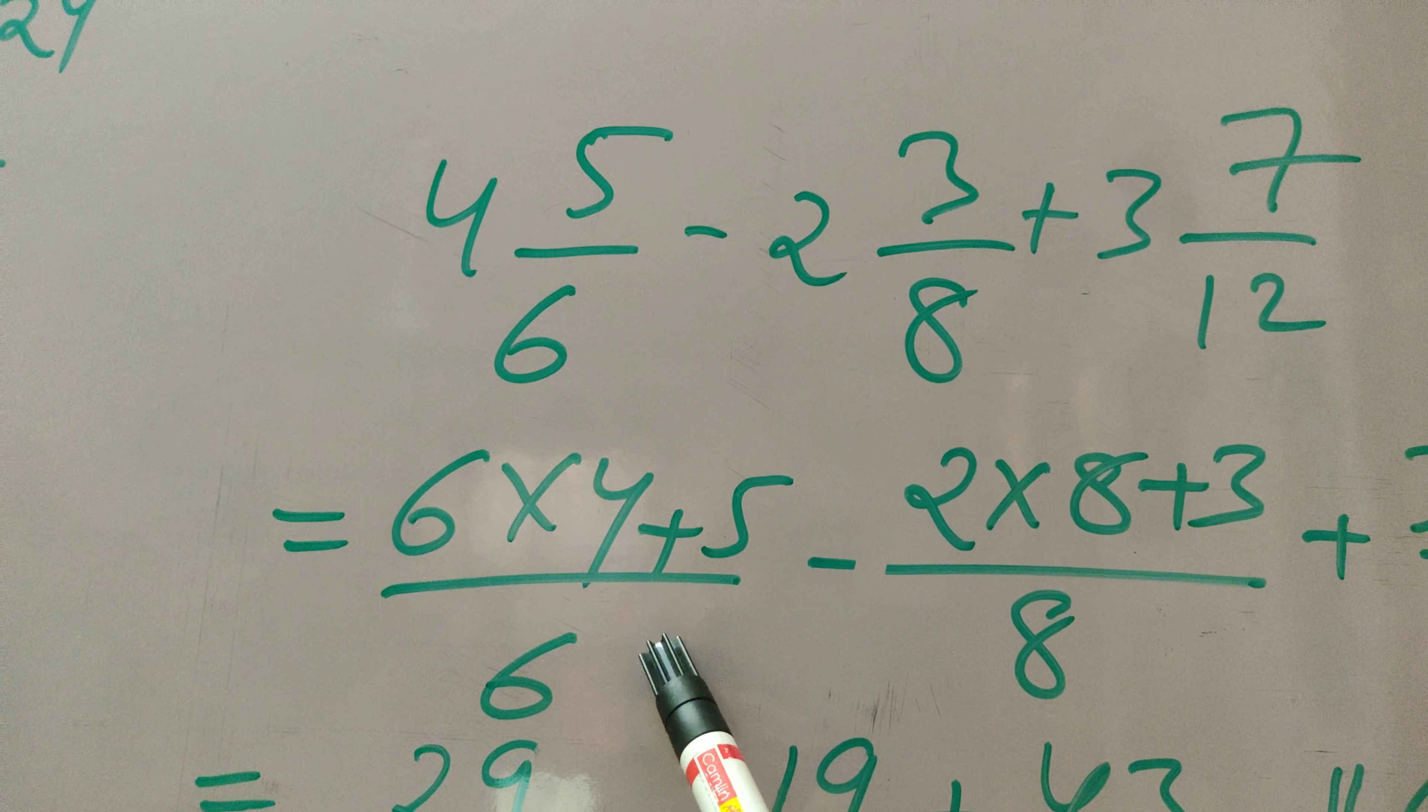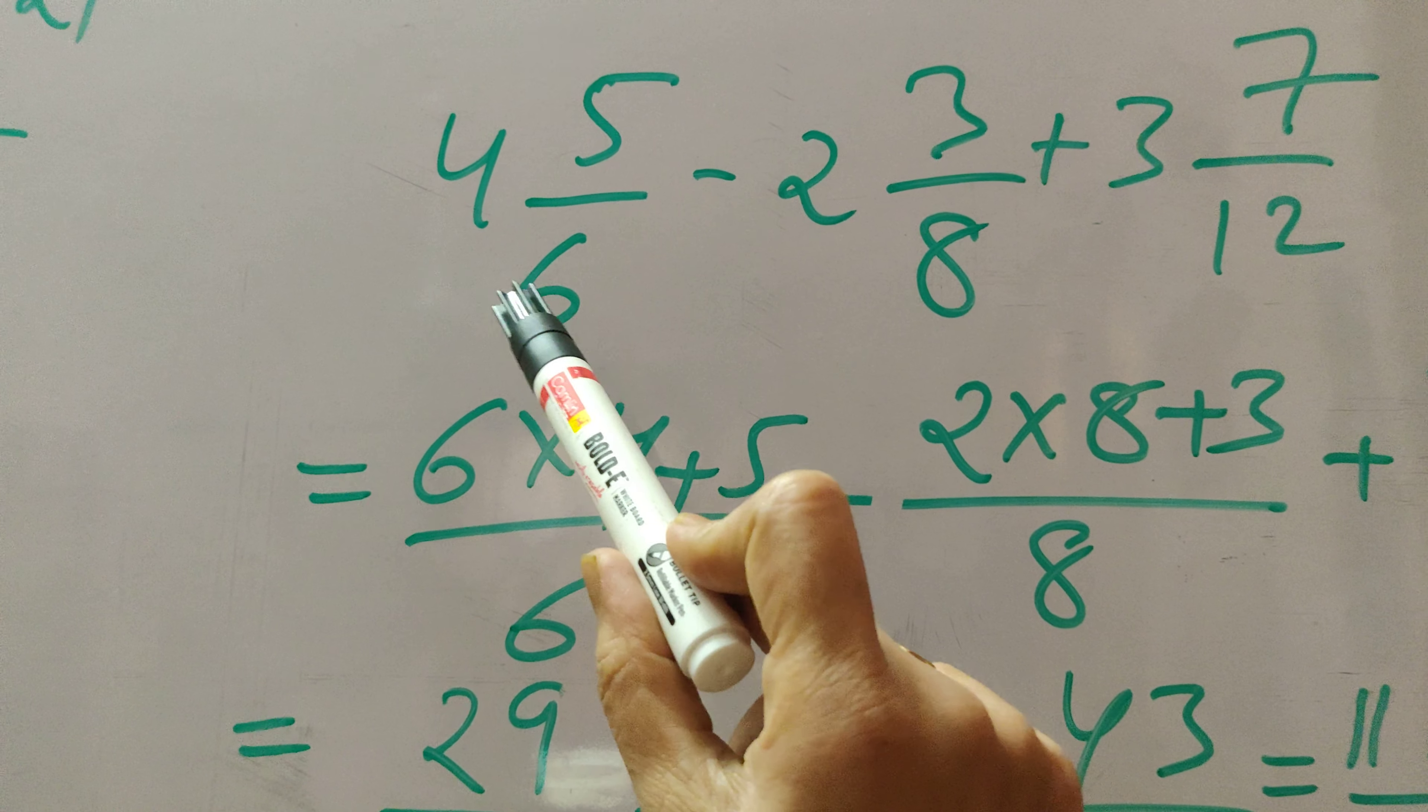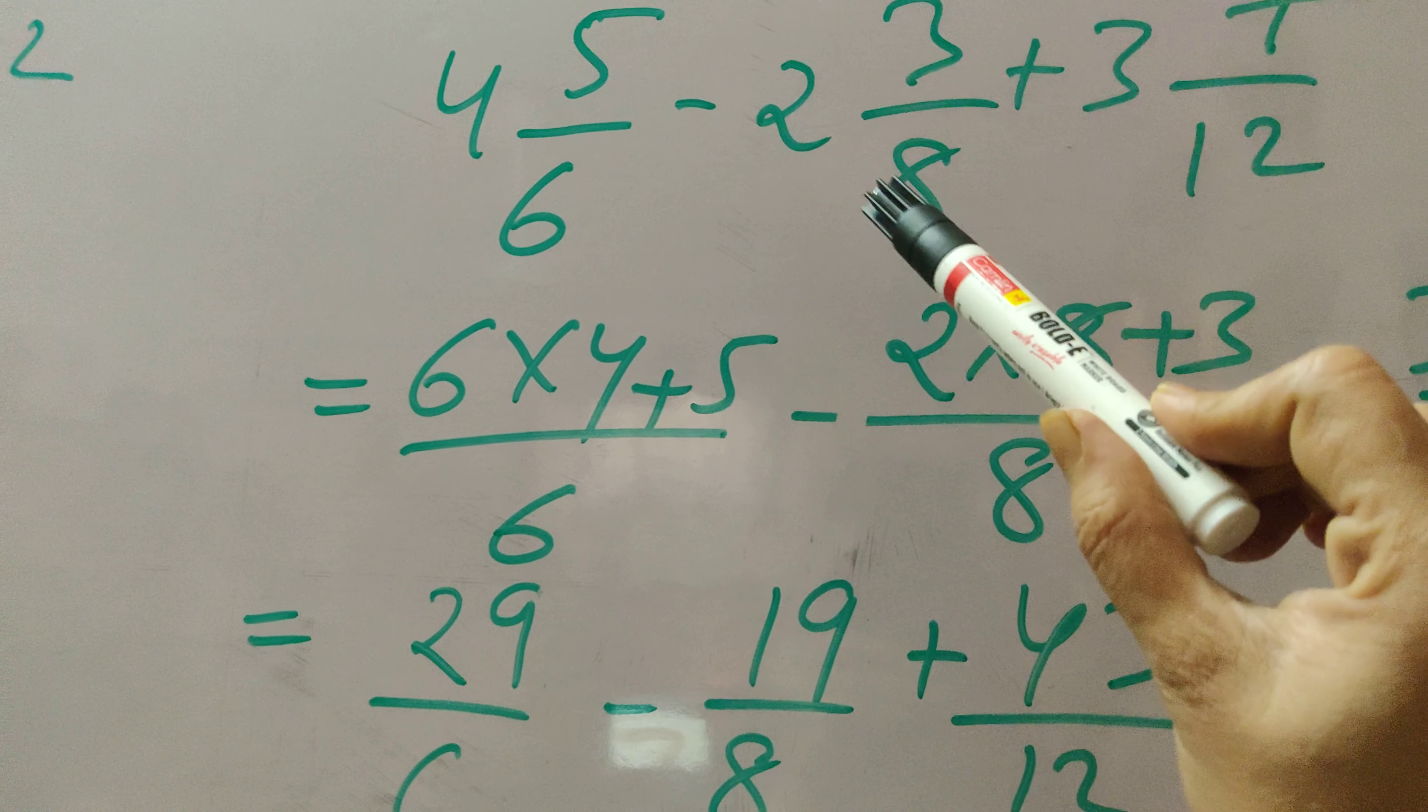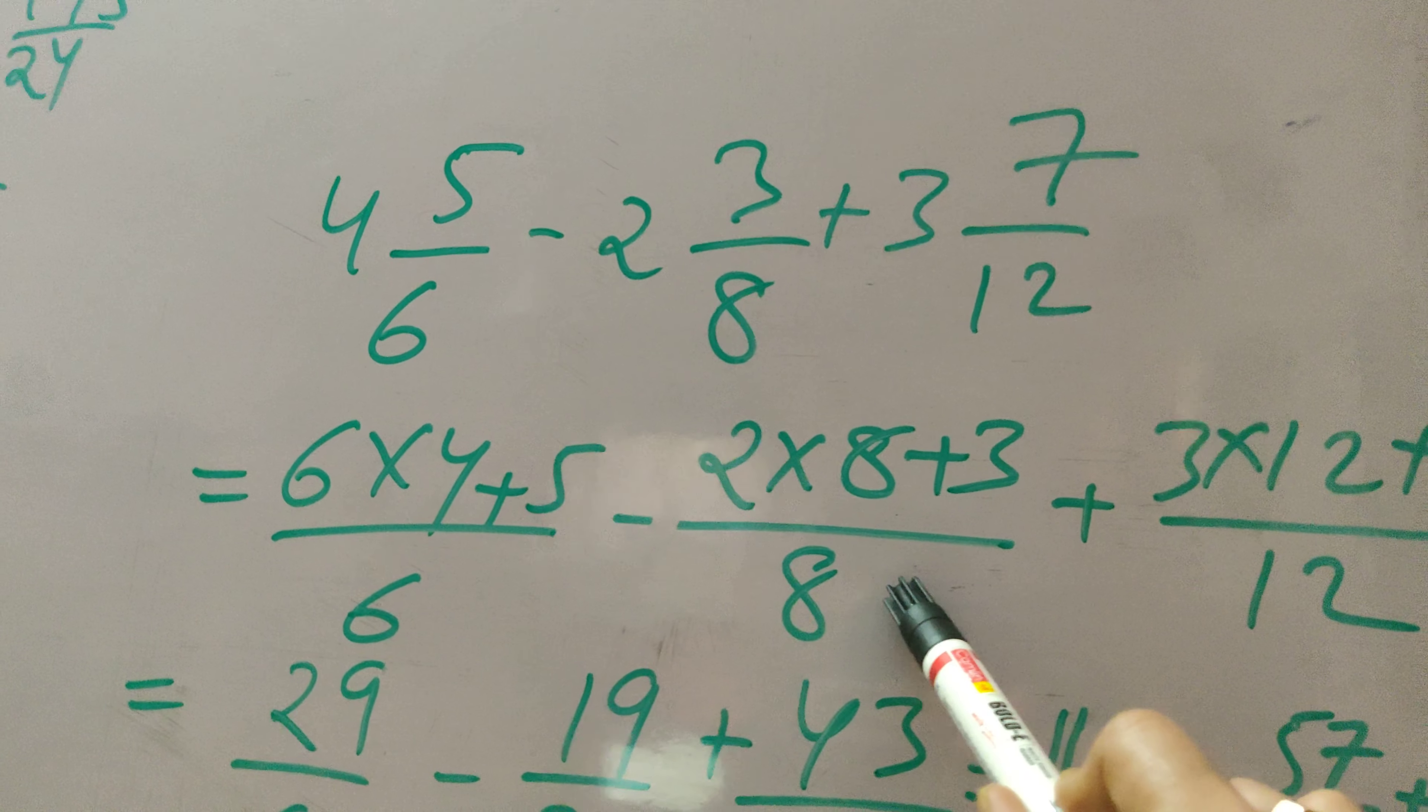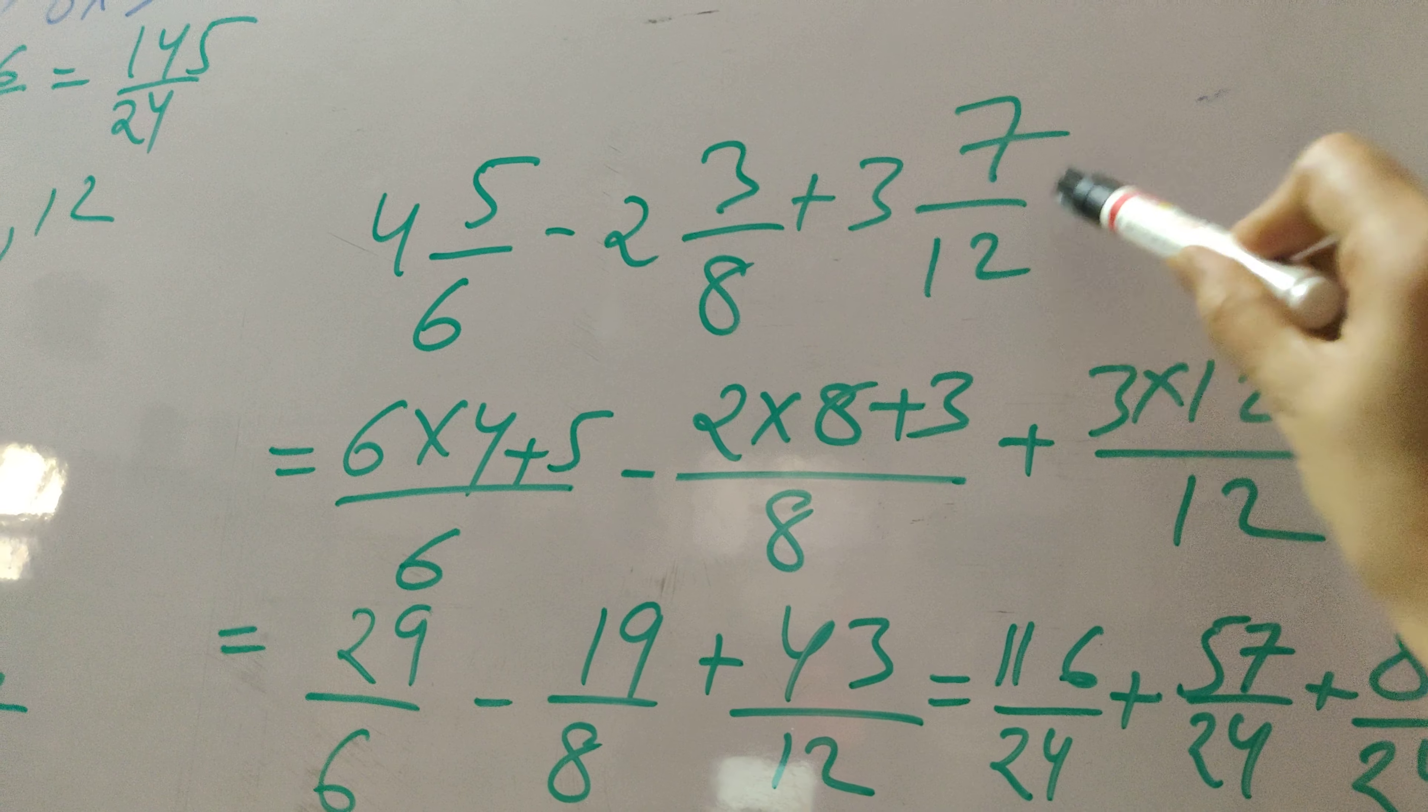First we will change this mixed fraction into a proper fraction. That is 6 times 4 plus 5 by 6. Then this can be written as 8 times 2 plus 3 by 8, minus from this, and plus 3 times 12 plus 7.